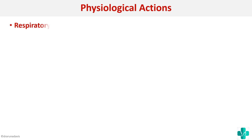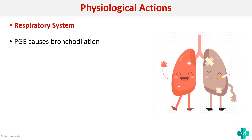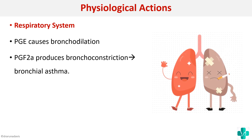Next we will see the effect on the respiratory system. Here also there is a dual effect: PGE can cause bronchodilation, whereas PGF2-alpha can cause bronchoconstriction, thereby causing bronchial asthma. So prostaglandins can have dual effects on the respiratory system.